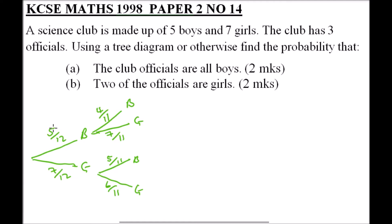On the next branch, we may have a boy selected or a girl selected. If a boy is selected — since we have removed two boys — we have 3 over 10, and the number of girls remains the same at 7 over 10. On another branch, since one boy and one girl have been selected, the number of boys is 4 out of 10 and the number of girls is 6 out of 10.